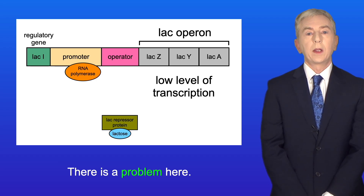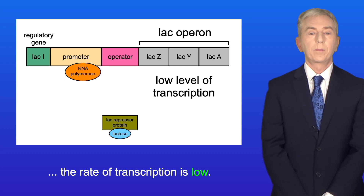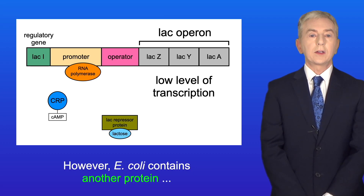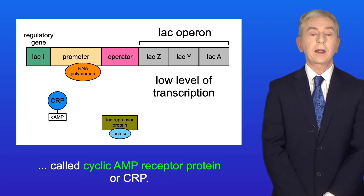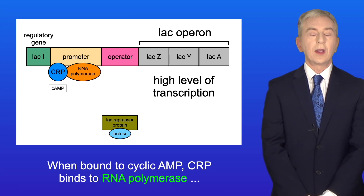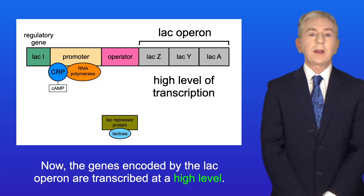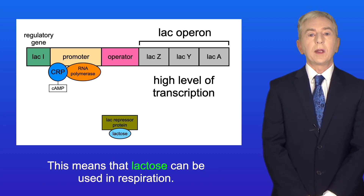Now there is a problem here. Even when the RNA polymerase can bind to the promoter, the rate of transcription is low. However, E. coli contains another protein called cyclic AMP receptor protein, or CRP. When bound to cyclic AMP, CRP binds to RNA polymerase and increases the rate of transcription. The genes encoded by the lac operon are then transcribed at a high level, meaning that lactose can be used in respiration.